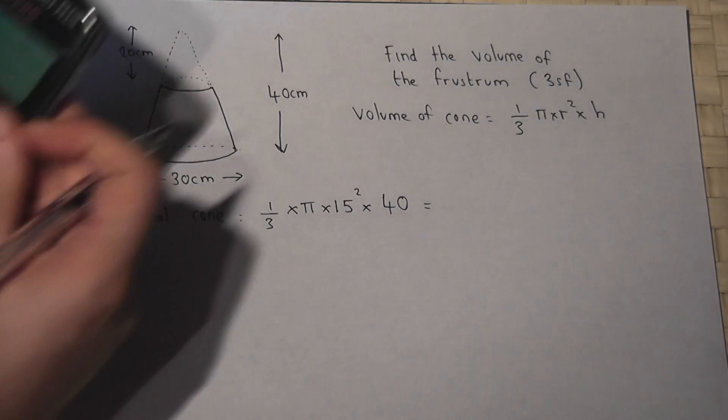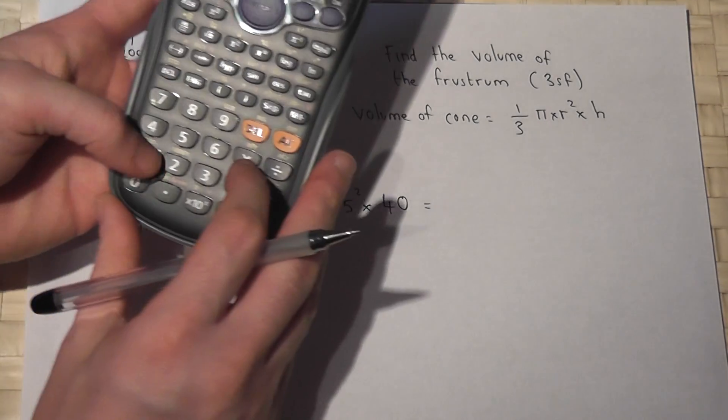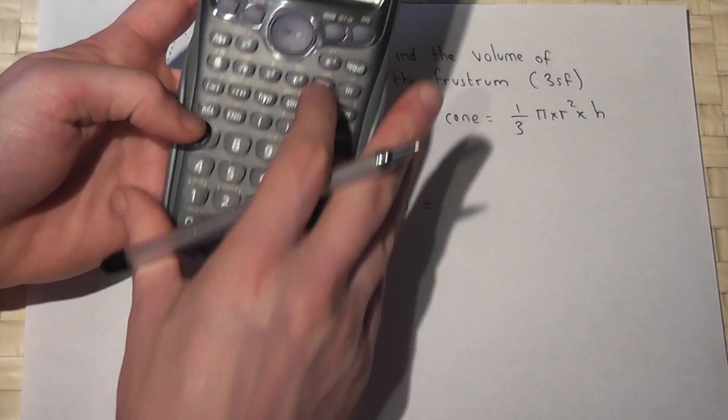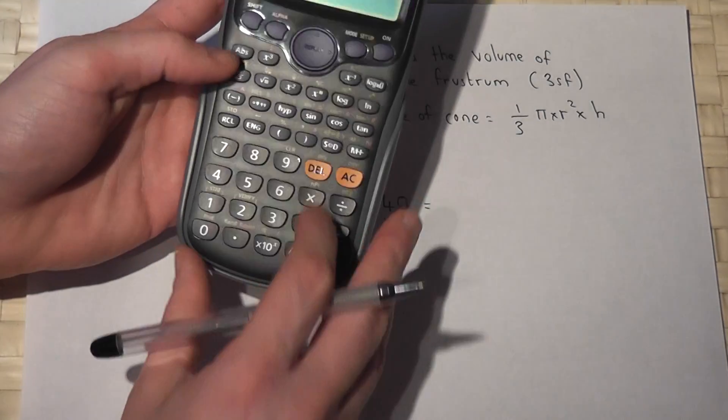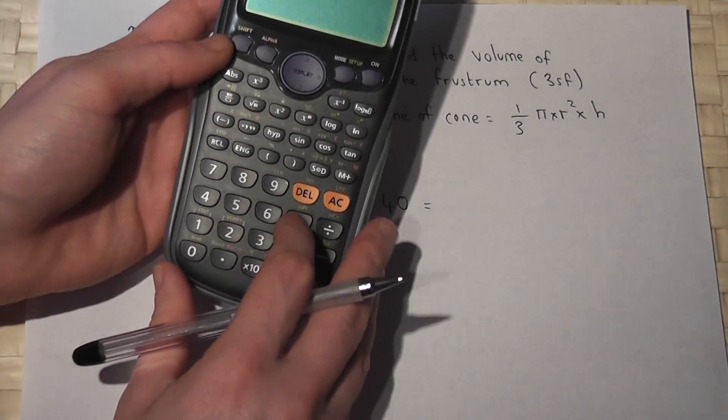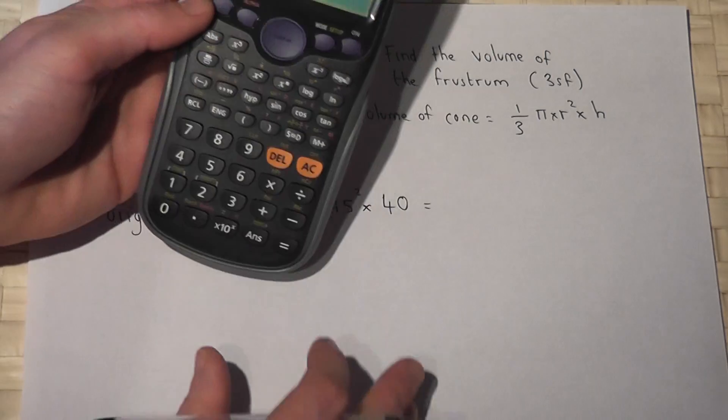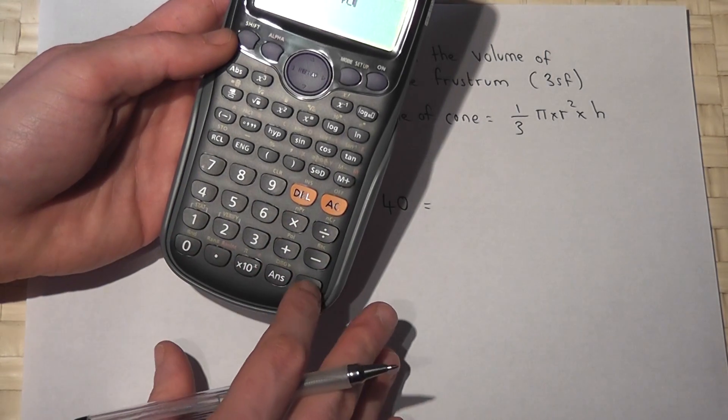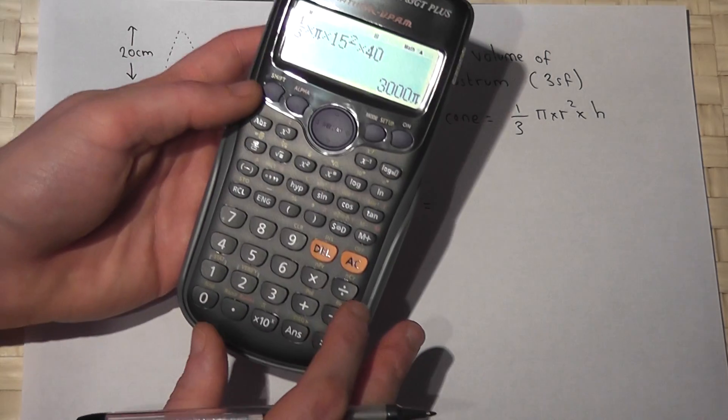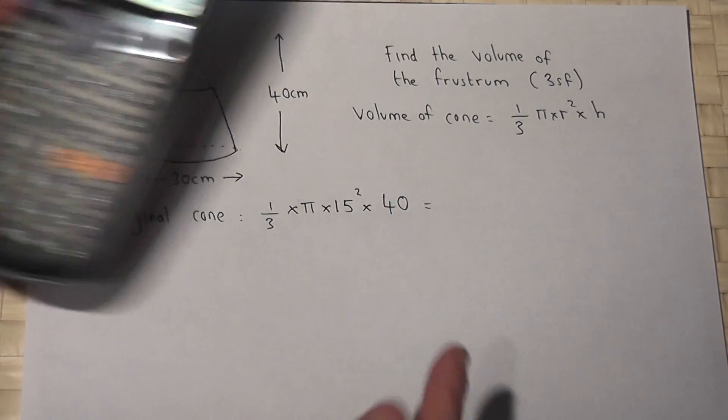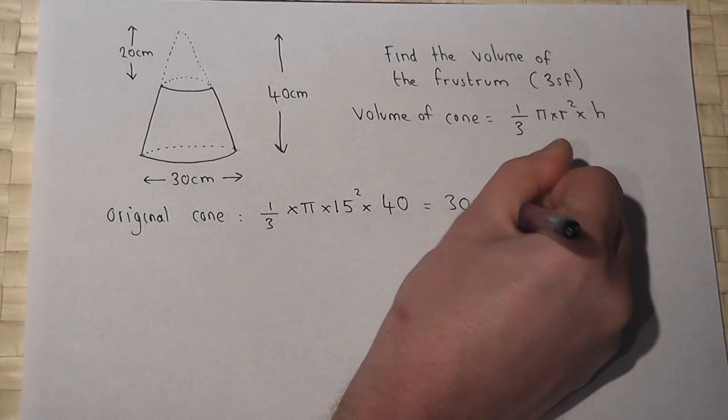So if we work this out, we have one third times pi times 15 squared times 40, which is 3000 pi. So I'll leave it currently in terms of pi.